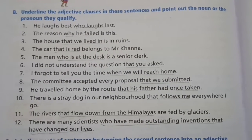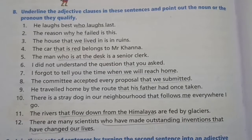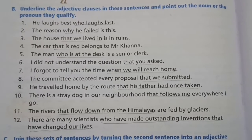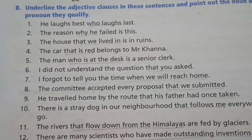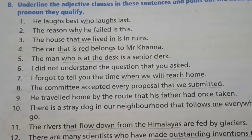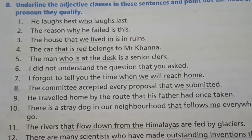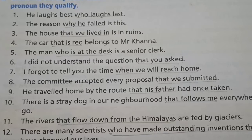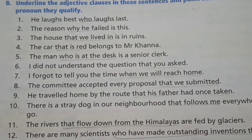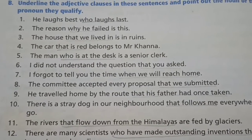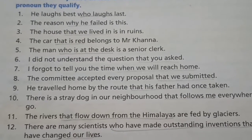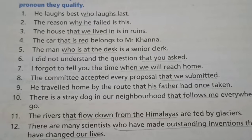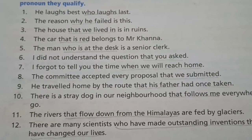Next is Exercise B. Here we will underline the adjective clauses and point out the noun or pronoun they qualify. First: 'who laughs last' is the adjective clause qualifying the pronoun 'he'. Second: 'why he failed' is the adjective clause qualifying the word 'reason'. Third: 'that we lived in' is the adjective clause qualifying the noun 'house'.